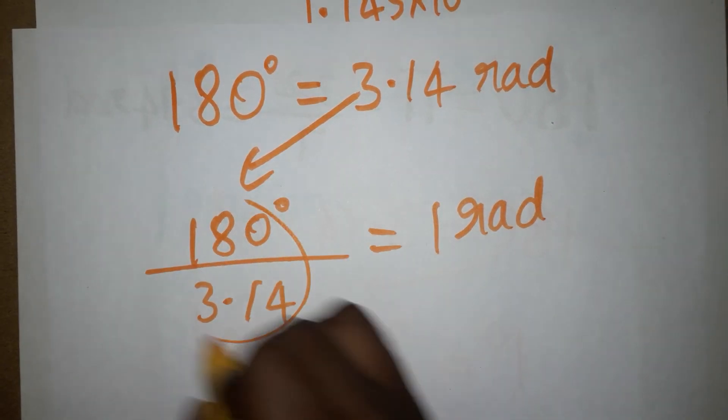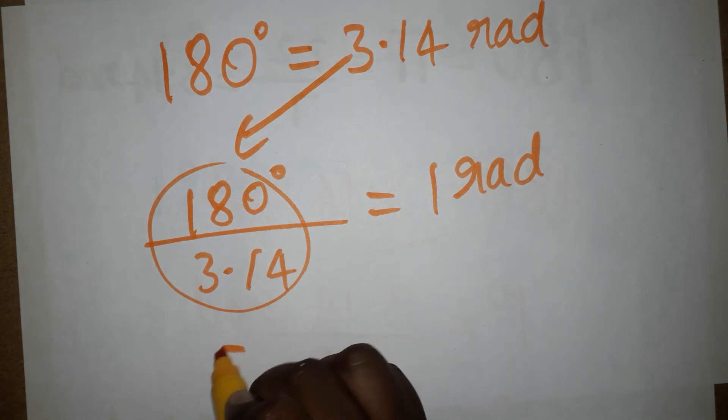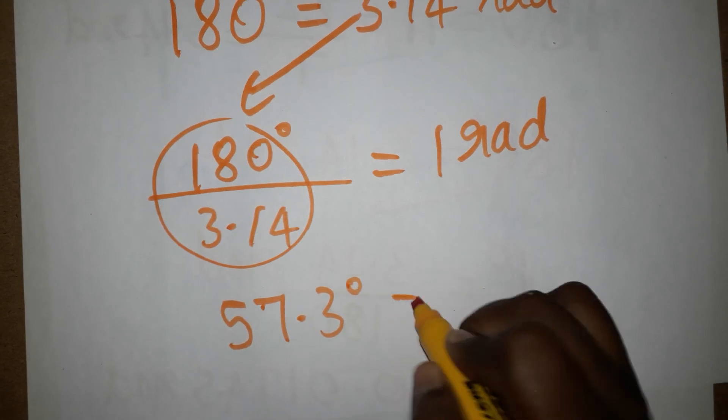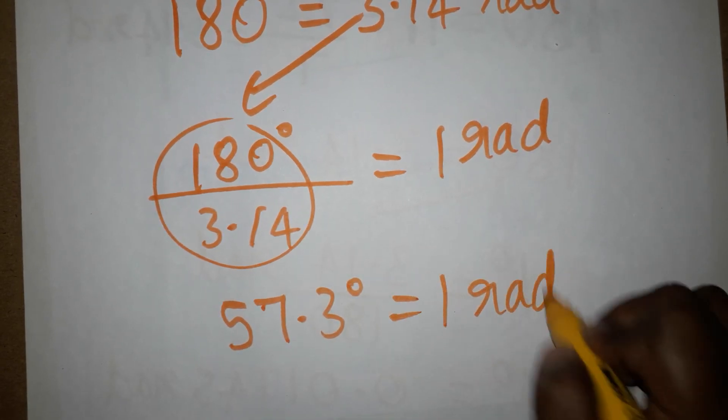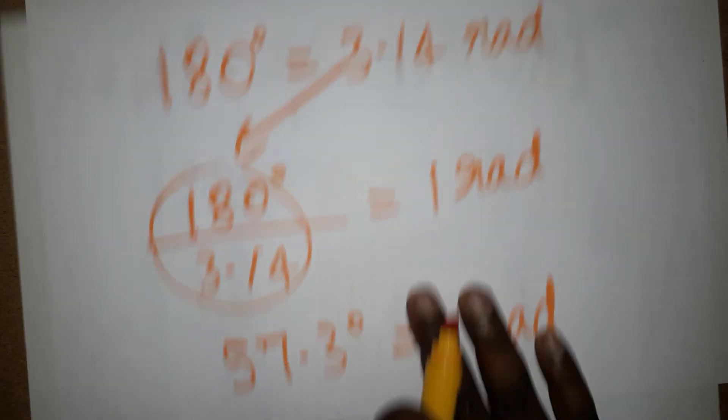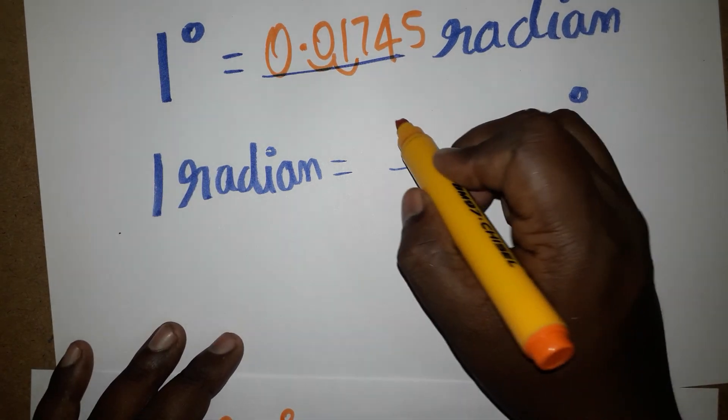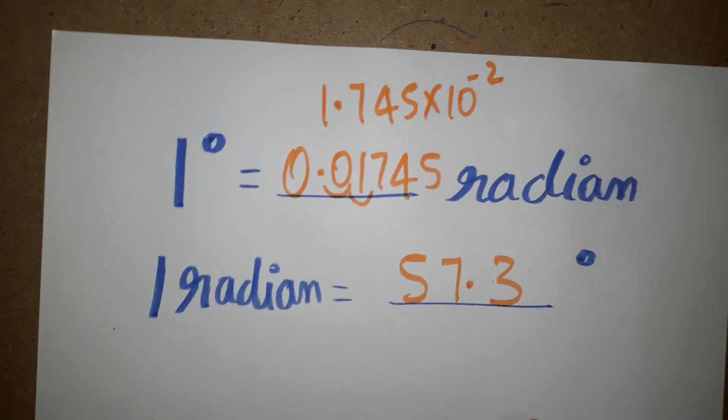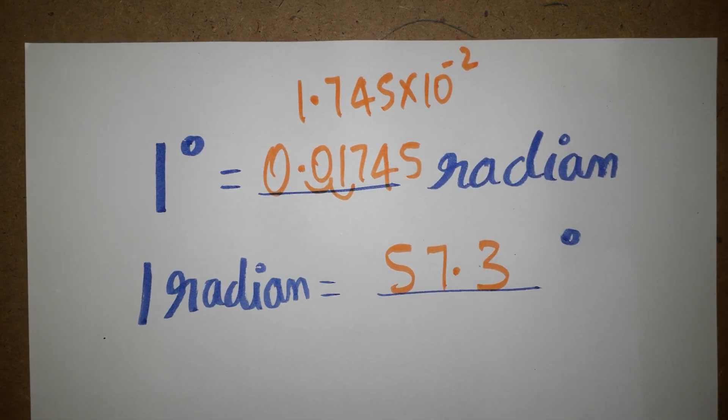So 1 radian equals 57.3 degrees. Thank you for watching my channel. If you like my channel please subscribe. Thank you everyone.